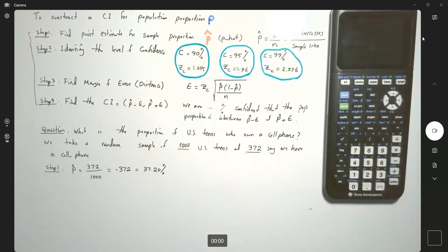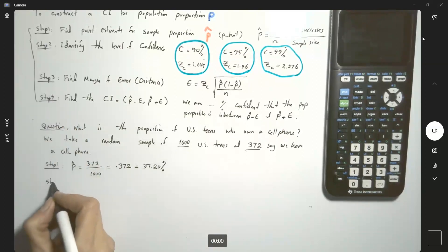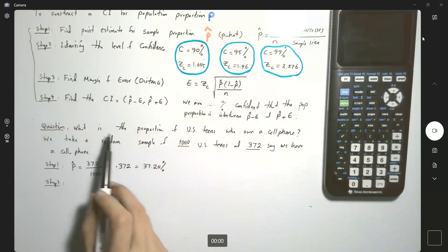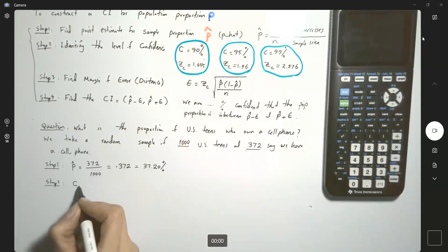We're not going to stop here. We're going to continue. We're going to go to step two. In step two, you're going to identify the level of confidence. In this question, I don't see any pieces of information about the level of confidence. When you see a question like this, with no information about the level of confidence, you'd by default select C to be 95%.